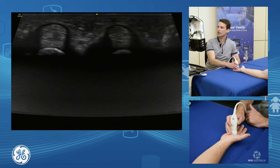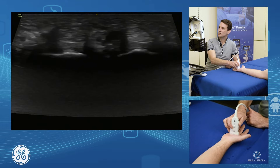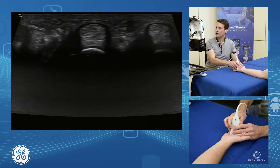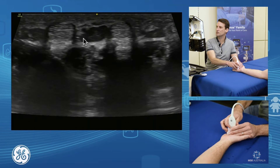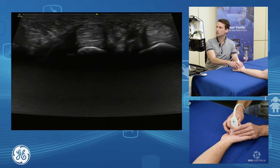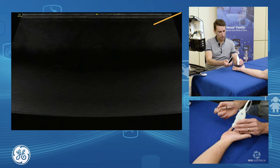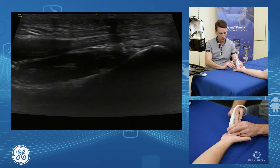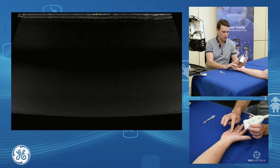For the trigger finger injection, we come in short axis. There's our pulley. We want to get that tendon right over to the edge of the probe - right over the edge, nice and close. On either side of the tendon we have a little neurovascular bundle, which we need to be aware of during injection. We slide over right to the edge and drop the needle down in there. We also have the option of being in long axis on the tendon and just dropping in on top of the tendon. Those are two ways of injecting our trigger finger.